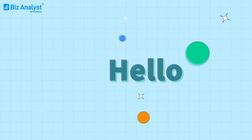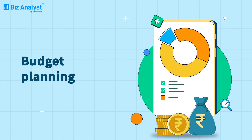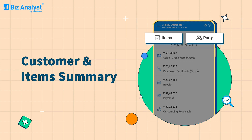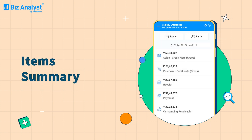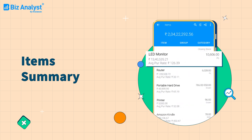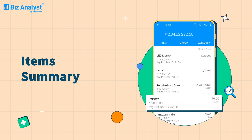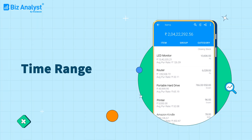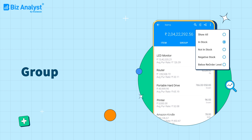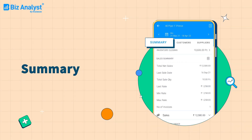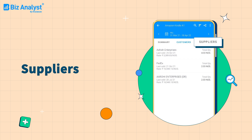Hello Biz Analyst users! Looking to improve your budget planning and business decisions? Then the customer and item summary feature is the perfect solution for you. To get a summary of your items, visit the Items tab. Here you can find the top selling items and the ones that might need upselling. You can also view them according to filters like time range, stock group, and categories. Select an item to view its summary, customers, suppliers, and much more.